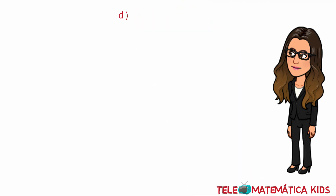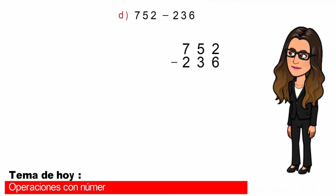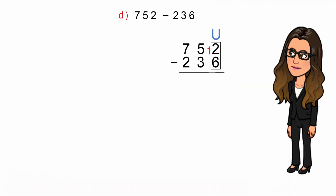Literal D: 752 menos 236. En primer lugar, escribimos los números verticalmente teniendo en cuenta que el minuendo se coloca encima y el sustraendo debajo. En segundo lugar, identificar la columna de las unidades y restar. Pero no podemos restarle 6 al 2, entonces le pedimos una prestada a la decena: el 2 se transforma en 12 y el 5 se transforma en 4. Luego restamos: 12 menos 6 es igual a 6.